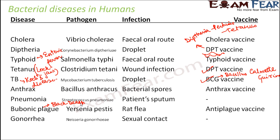Gonorrhea is caused by the pathogen Neisseria gonorrhoeae. It is a sexually transmitted disease, so it spreads through sexual contact. From an examination point of view, it is important to remember the names of diseases, their causal organisms, symptoms, mode of infection, and available vaccines.